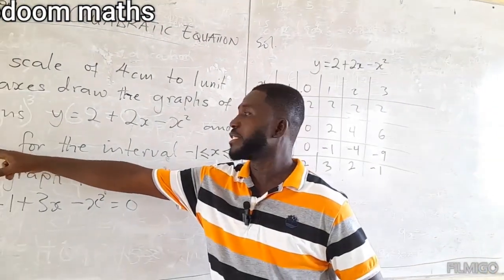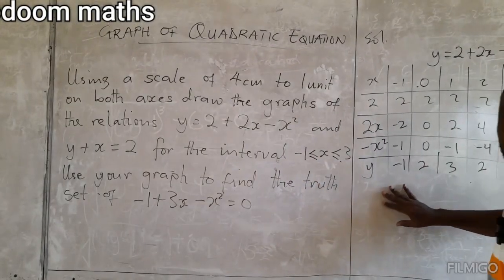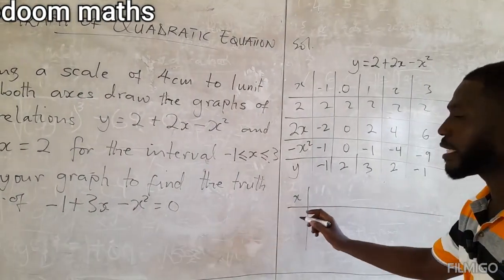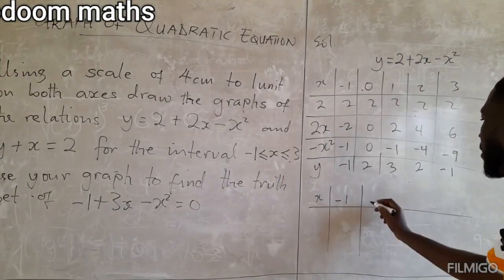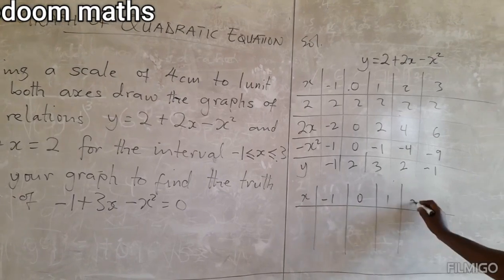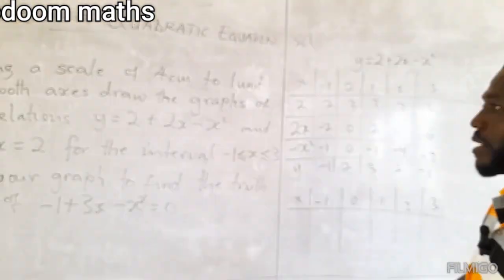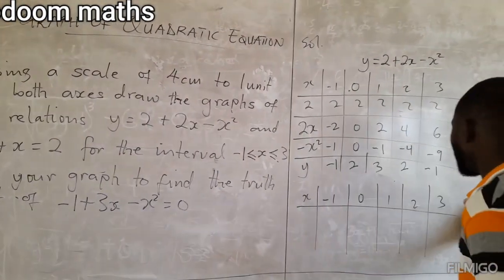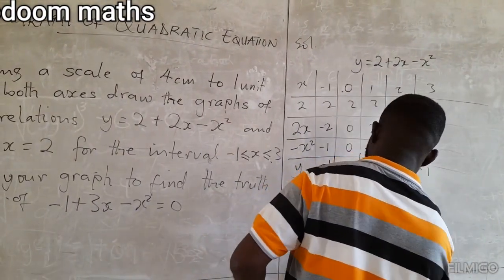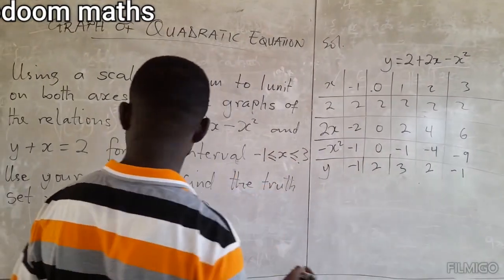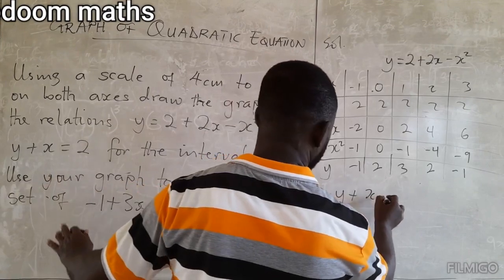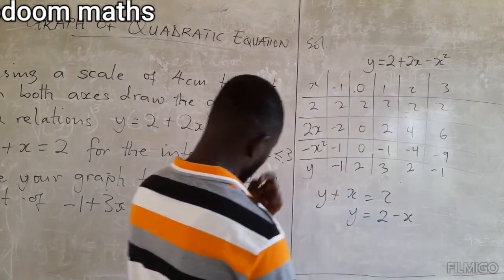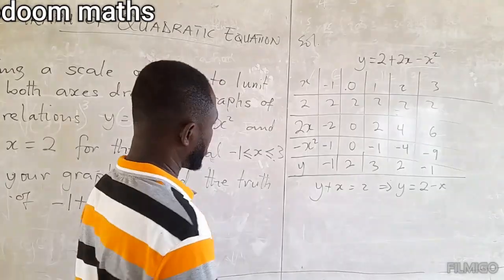Now we take the second relation and get the table for that. So again x values: negative 1, 0, 1, 2, and then 3. We can rewrite y plus x equals 2 as y equals 2 minus x. So now we set up the table with the constant 2 and negative x.